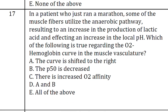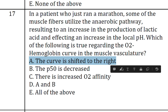In a patient who just ran a marathon, some of the muscle fibres utilize the anaerobic pathway, resulting in an increase in the production of lactic acid and affecting an increase in local pH. Which of the following is true regarding the O2-hemoglobin curve in the muscle vasculature? The answer is A, the curve is shifted to the right.